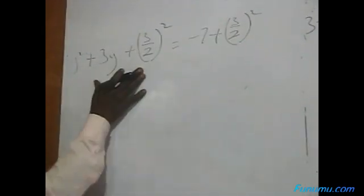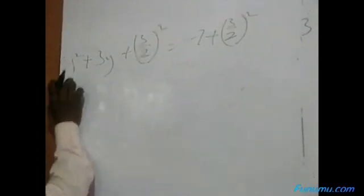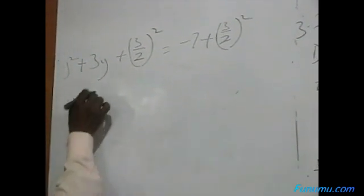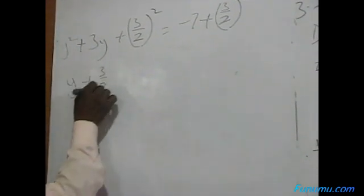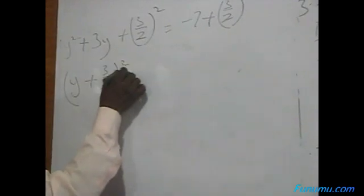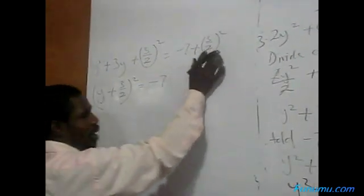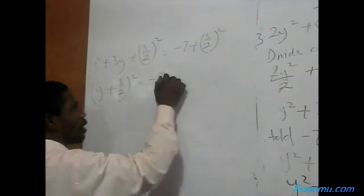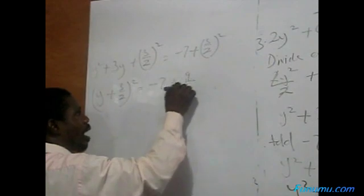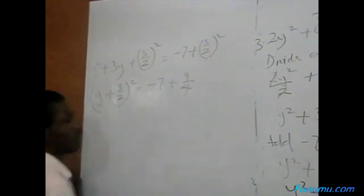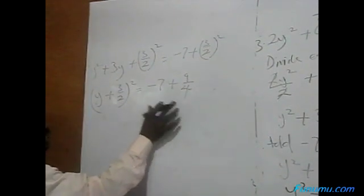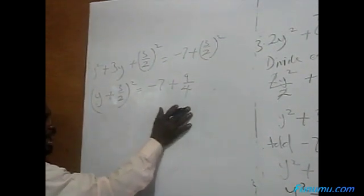Factorize this one — you pick one from here, you pick one from here — equals Y plus 3 all over 2, all squared, equal to minus 7. This gives us 1 plus 9 all over 4.